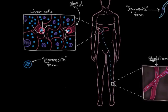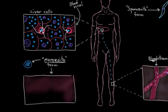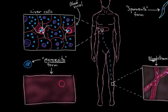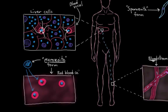This form of Plasmodium — merozoites — will go on to infect our red blood cells. They'll find red blood cells in our bloodstream, which isn't hard to do, and they'll get inside them. Red blood cells are their new home.